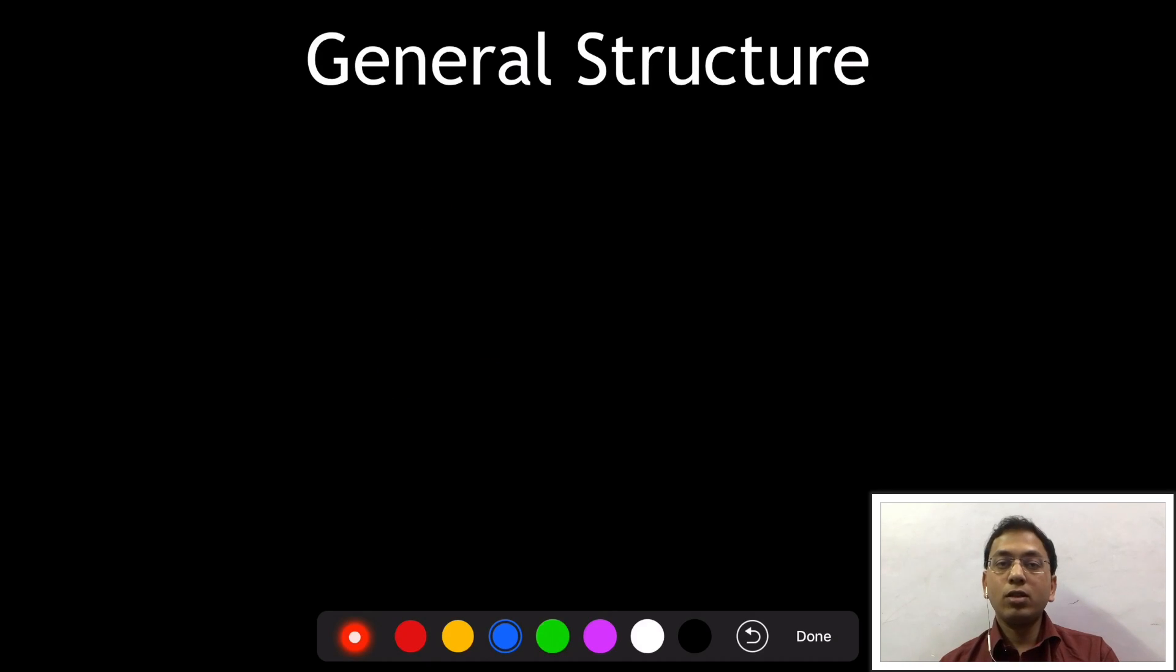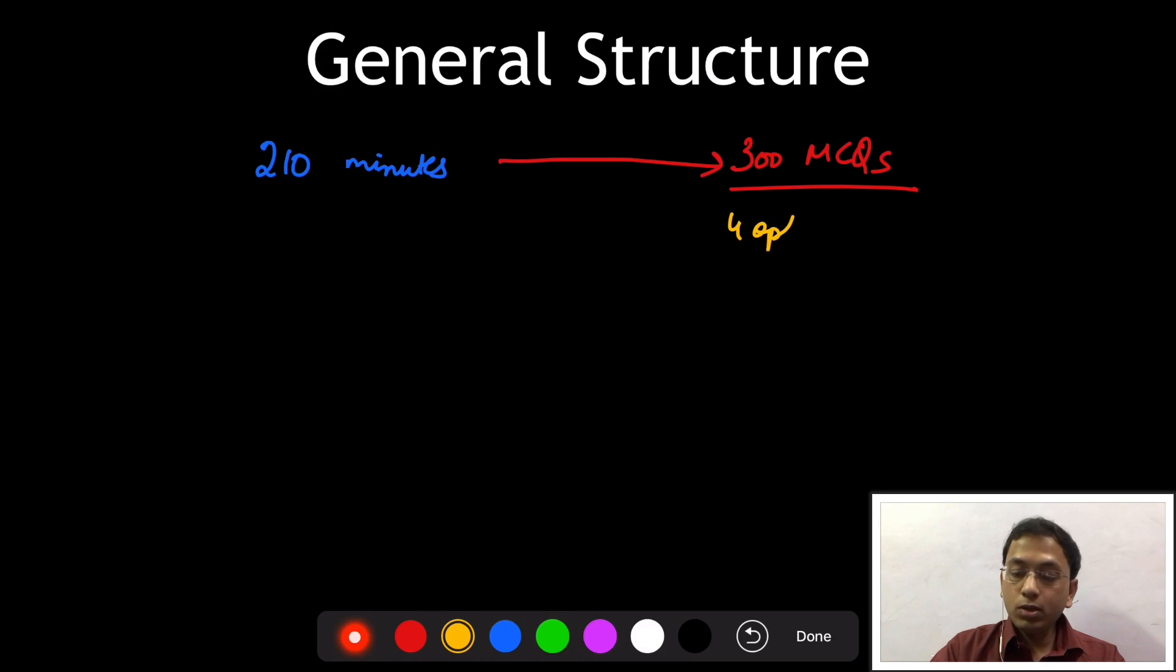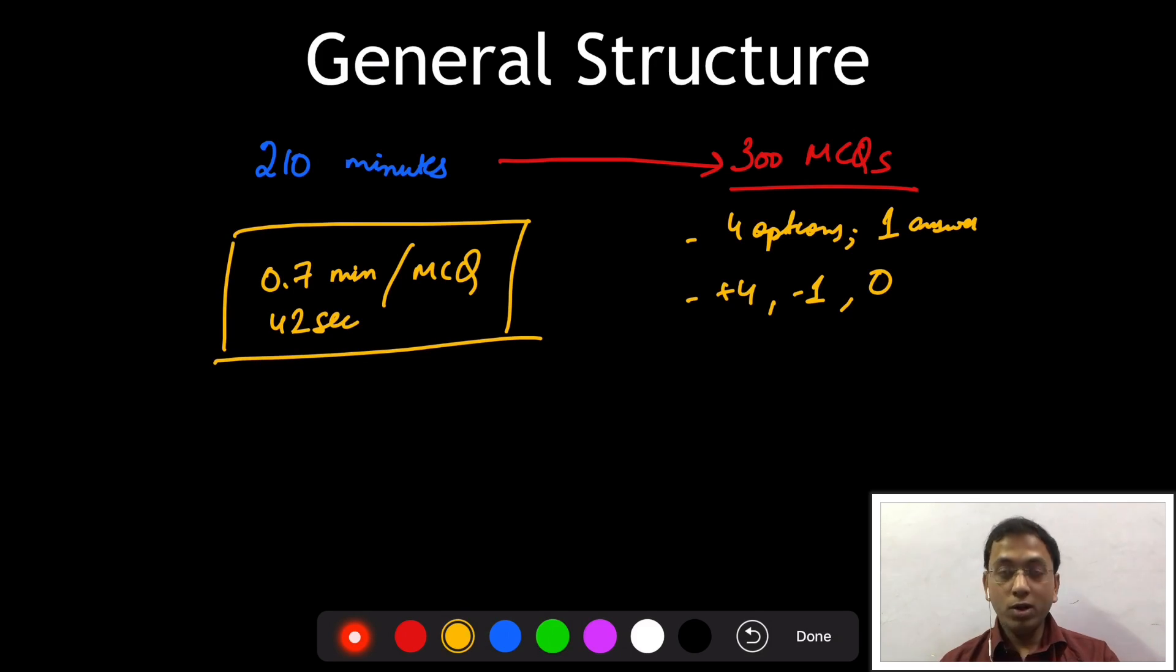We start with the general structure, basic structure of the exam. This NEET PG exam duration is 210 minutes and in these 210 minutes we have to solve 300 MCQs. These MCQs have 4 options with 1 single correct answer. For every correct answer we have plus 4, every wrong answer gives us minus 1, and for not attempting the question we do not get anything. If you do your math here, you will come up with 0.7 minutes per MCQ which comes out to be 42 seconds per MCQ. This equation might seem a bit daunting in the start but trust me it is not, and if you go through the exam at a decent pace you are bound to end up with spare time at the end.